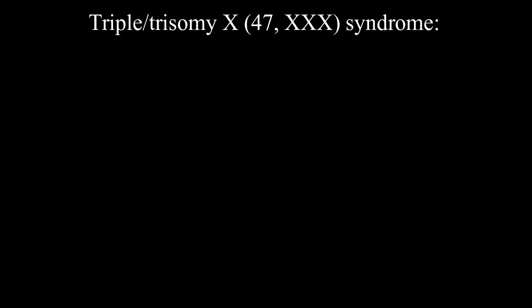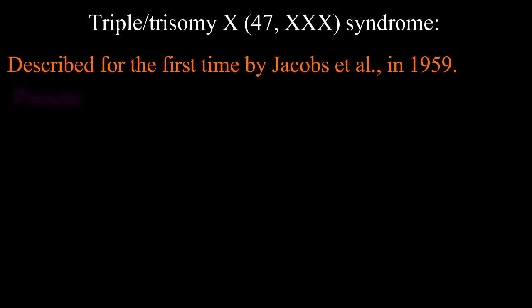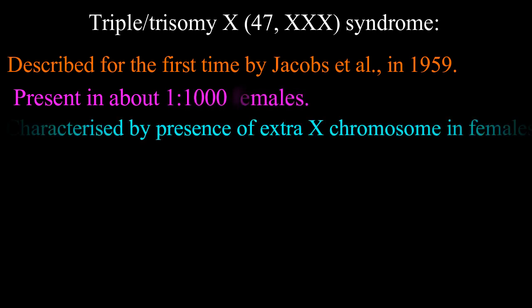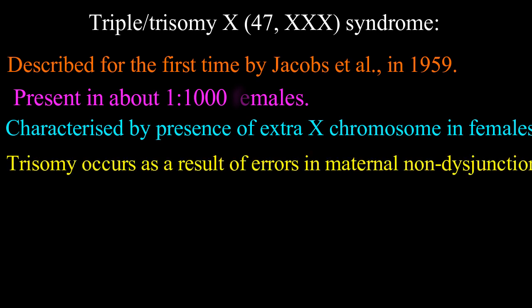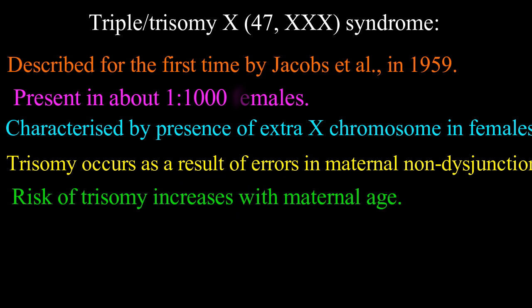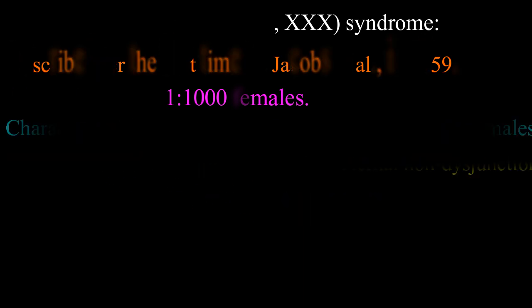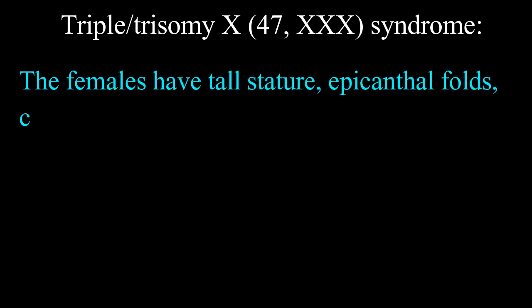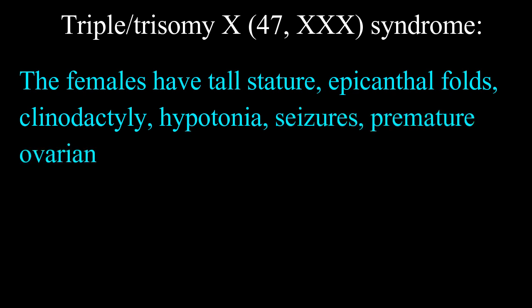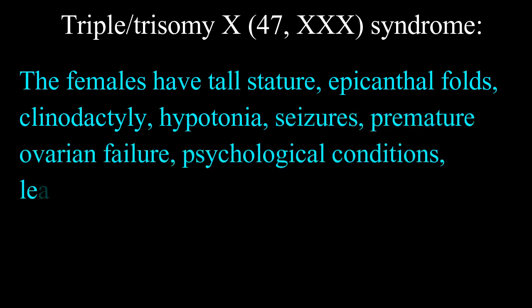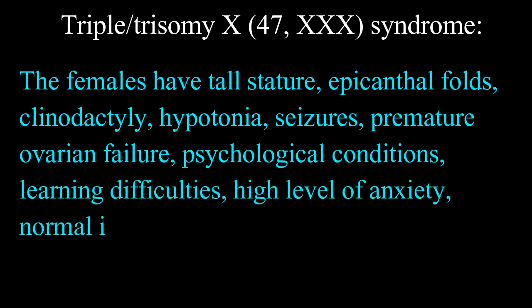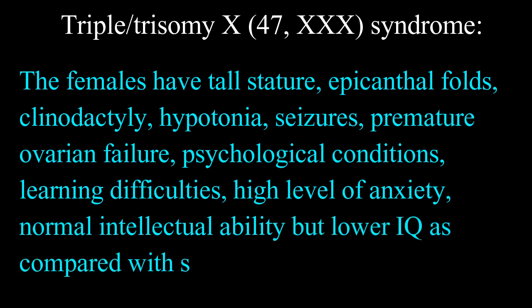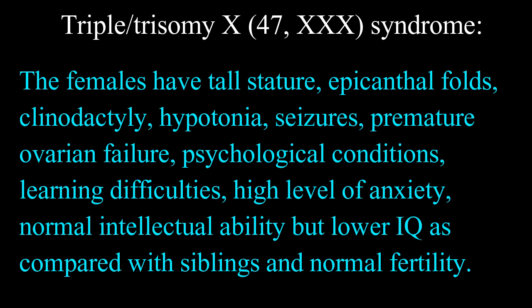Triple X or Trisomy X syndrome — 47 XXX — was described for the first time by Jacobs et al. in 1959, and is present in about 1 in 1,000 females. This syndrome is characterized by the presence of an extra X chromosome in females. Trisomy occurs as a result of error in maternal non-disjunction, and the risk increases with maternal age. Females have tall stature, epicanthal folds, clinodactyly, hypotonia, seizures, premature ovarian failure, psychological conditions, learning difficulties, high levels of anxiety, and normal intellectual ability but lower IQ compared to siblings, with normal fertility.